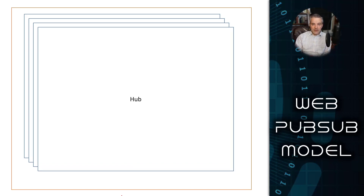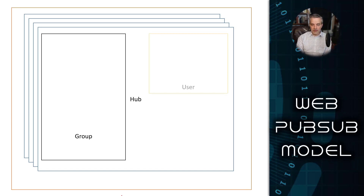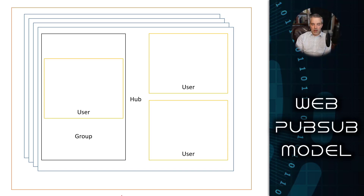A hub has two high-level logical objects you can use to organize resources: groups and users. A group is just a group of users. A user does not have to be a member of a group, but a group really needs to have a user as part of it to be a meaningful context. A user can be a member of a group, doesn't have to be, or can be a member of multiple groups. A user can join and leave groups, or not use groups at all.